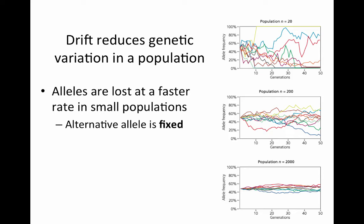Alleles are lost at a faster rate in smaller populations, and then the alternative allele becomes fixed — again, random fixation of alleles. It takes a lot longer in a population of 200 for allele frequencies to change dramatically. Eventually over more generations these lines will also go to the top or bottom and one allele will become fixed. In much larger populations it takes even longer, but it's a mistake to think that genetic drift is only a factor in very small populations.